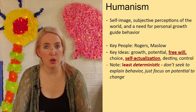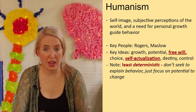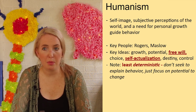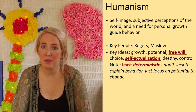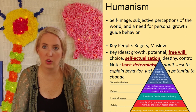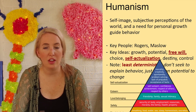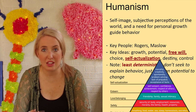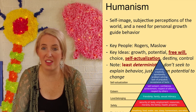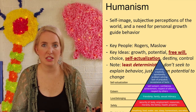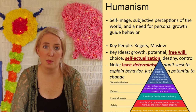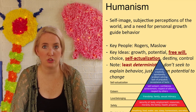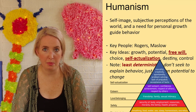Self-actualization is the ultimate goal for all individuals. We can explain behavior through Maslow's hierarchy — if a person is not feeling safe, they won't be thinking about morality, creativity, or problem solving. They'll focus on basic needs first, then friendships, family, and self-perception, before reaching those bigger ideas. Humanists believe we all have the ability and free will to pursue self-actualization as we move up the hierarchy of needs.